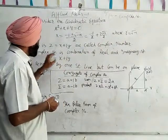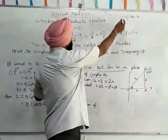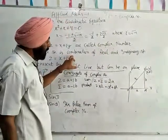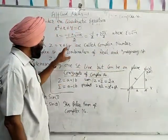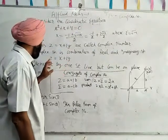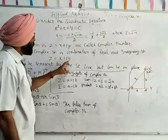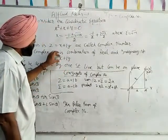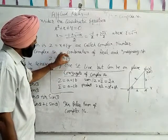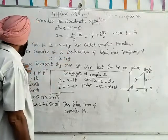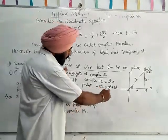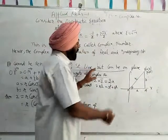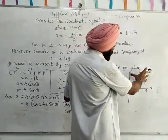Hence the complex number is the combination of real and imaginary parts. This is the real part and this is the imaginary part. That is z = x + iy, the form of the real part and imaginary part. It cannot be presented by a straight line. It can be presented in a plane.